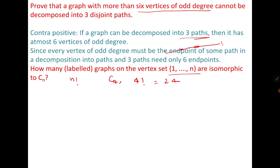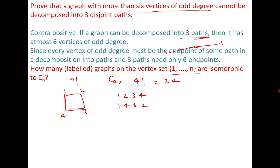Now when I talk of C4, the permutation 1, 2, 3, 4 represents the cycle where 1 is adjacent to 2, 2 is adjacent to 3, and 3 is adjacent to 4. But at the same time it also represents the cycle 1, 4, 3, 2 in anticlockwise order, meaning 1 is adjacent to 4, 4 is adjacent to 3, and 3 is adjacent to 2. Whichever permutation I write, I will have the same graph.